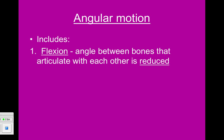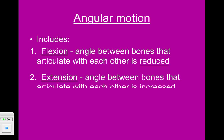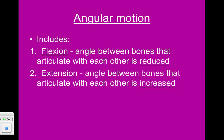The opposite of flexion is extension, and this is when the angle between the two bones that articulate with each other is increased — like when you take your arm from the flexed position at 90 degrees out to 180 degrees, so it's flat.